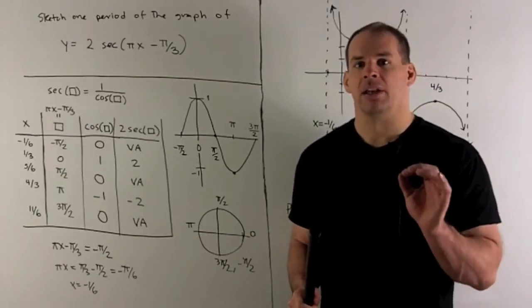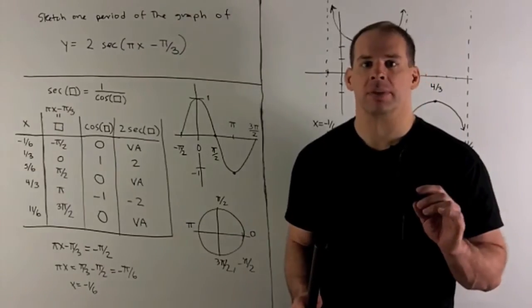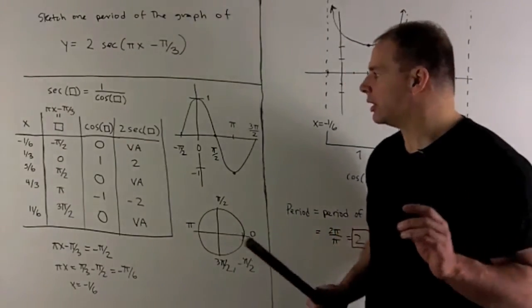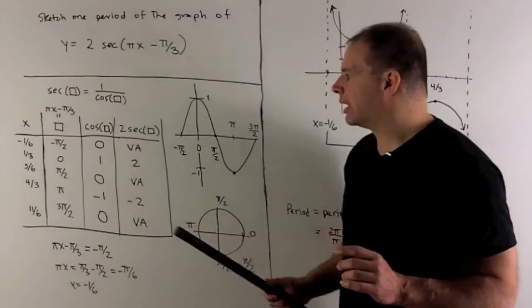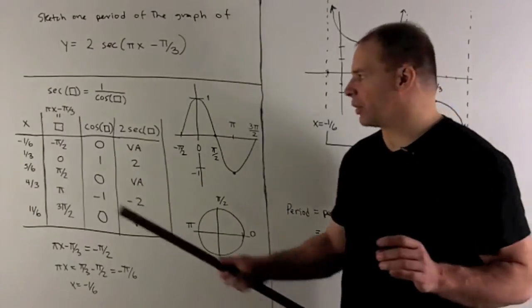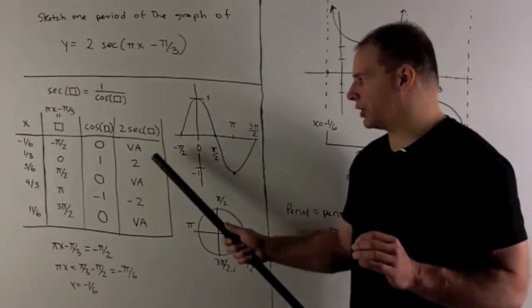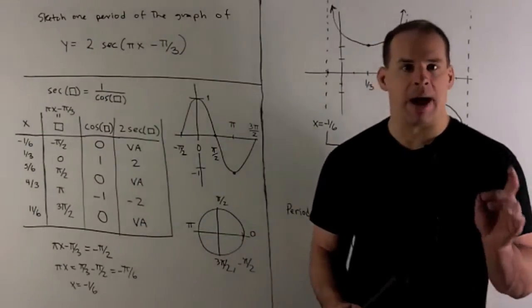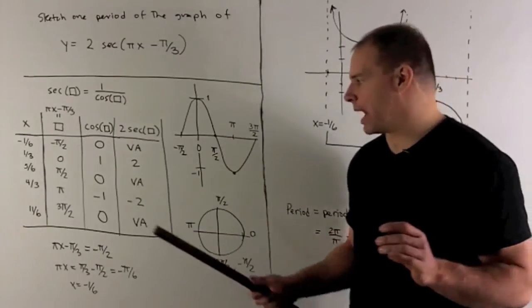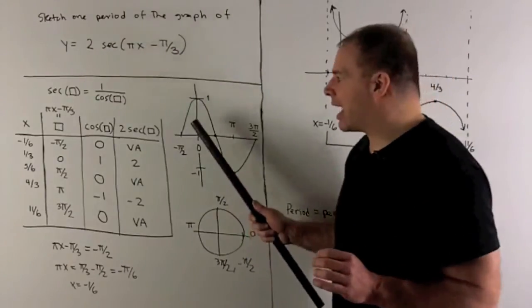Now if I want to get 2 sec, I get secant by taking the cosine and flipping it over. When I flip those zeros over, I'm going to get vertical asymptotes—three vertical asymptotes. Where we have the values, for instance at zero we get 1, flip it over to get 1, multiply by 2 to get 2. At π we get -1, flip it over to get -1, multiply by 2 to get -2.